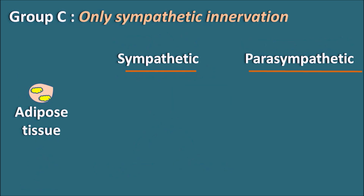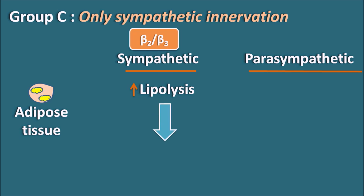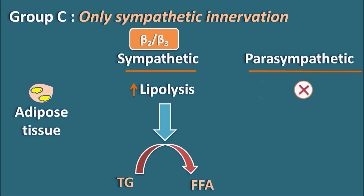Another organ is the adipose tissue. At the adipose tissue, the sympathetic system can work through either beta 2 or beta 3 receptors, which increase lipolysis — the breakdown of fat. By the action of the sympathetic system, triglycerides can be converted into free fatty acids. Again, the parasympathetic system has no innervation and no effect at the adipose tissue.